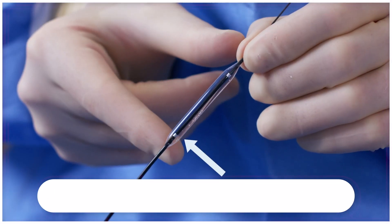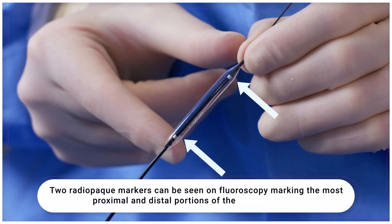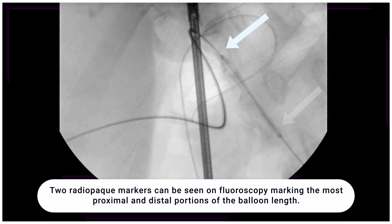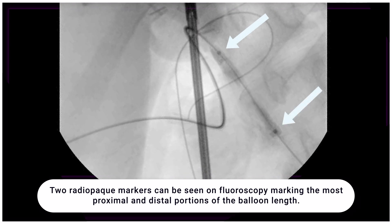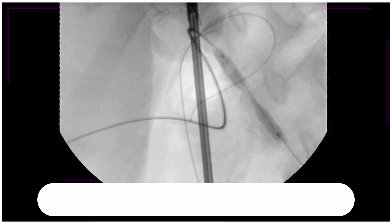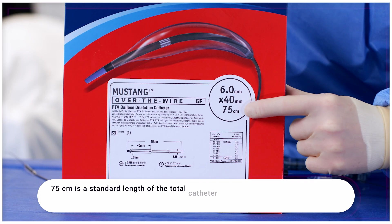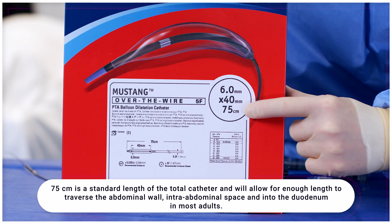Two radiopaque markers can be seen on fluoroscopy marking the most proximal and distal portions of the balloon length. 75 centimeters is the standard length of the total catheter, and that will allow for enough length to traverse the abdominal wall, intra-abdominal space, and into the duodenum in most adults.